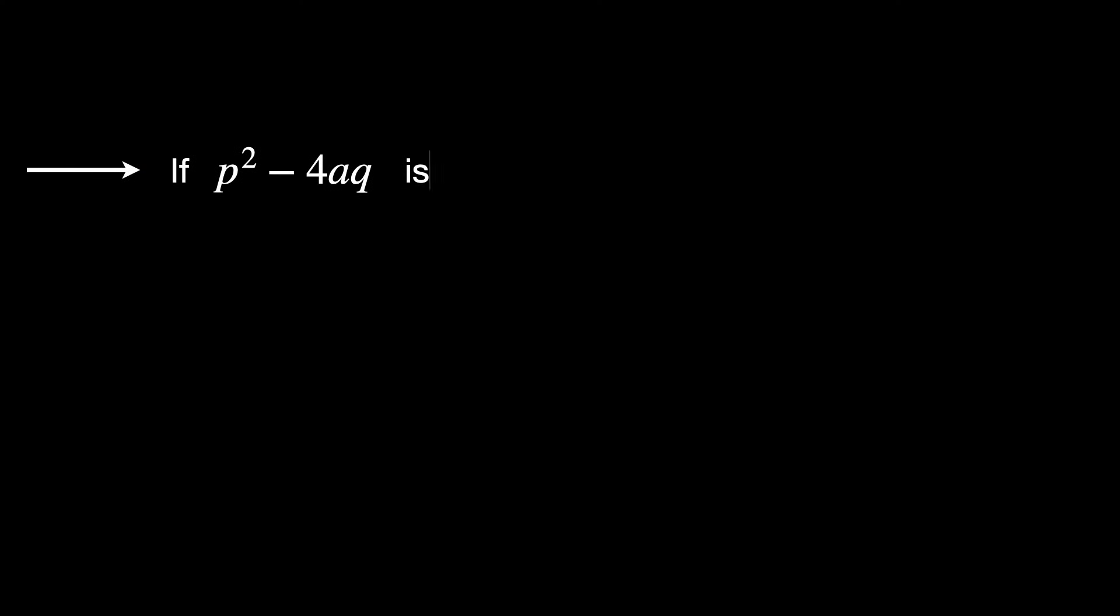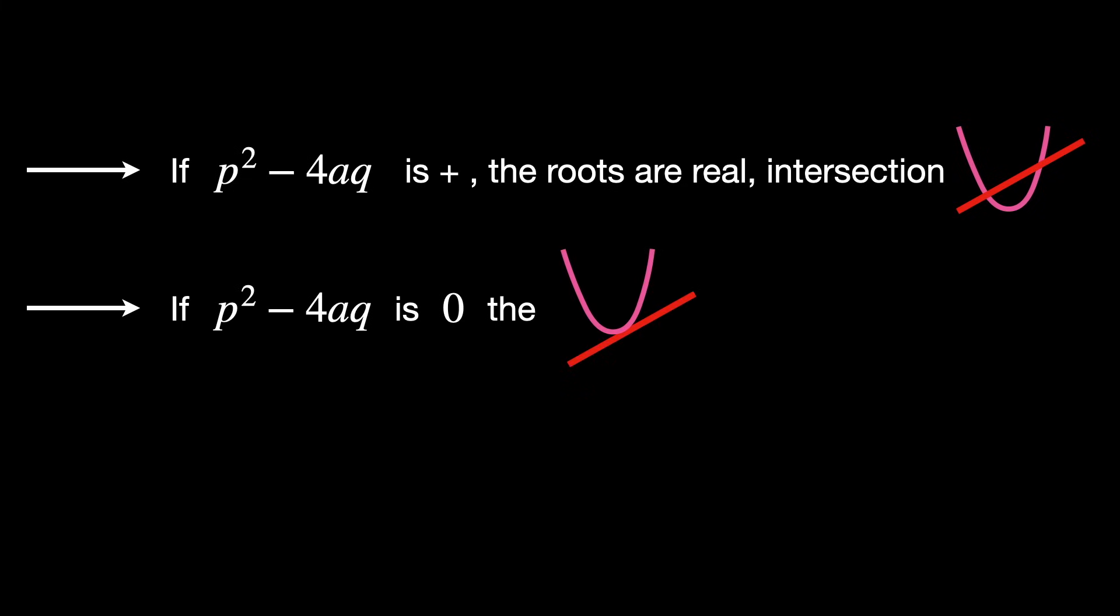Well, they would have to reason geometrically or algebraically to find whether the line intersects the parabola. If the discriminant p² minus 4aq is positive, the roots are real and the intersection exists. If it is zero, the line is tangent to the parabola. If negative, there is no intersection.